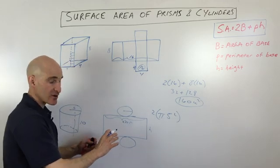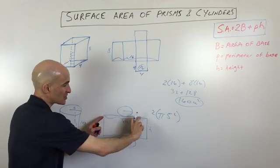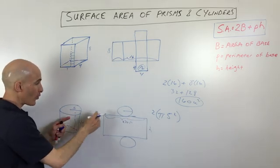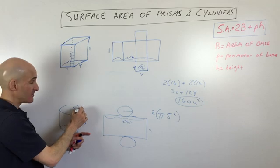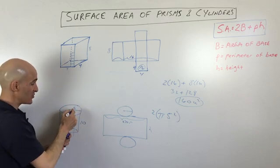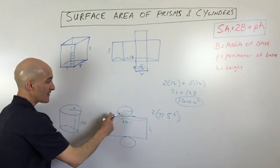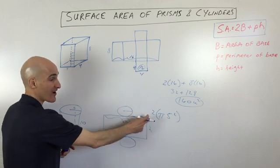Now this part here can be a little bit challenging. This is a rectangle, right? But where does this dimension here come from? It comes from the circumference of the circle, the circumference of the base. So when you cut this and you unroll it, this length is actually the circumference, two pi r.